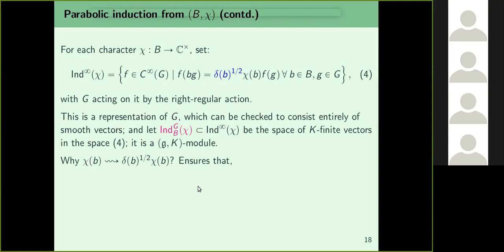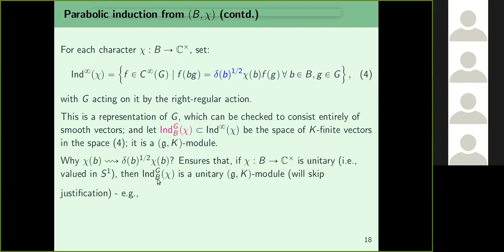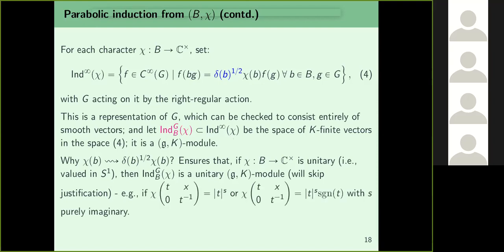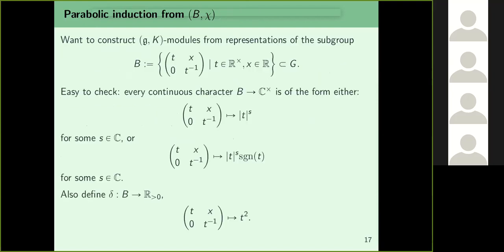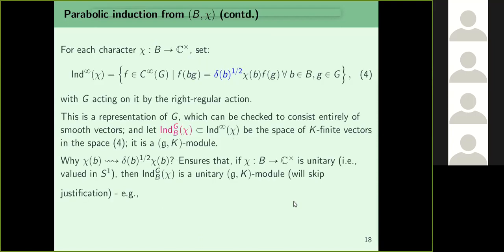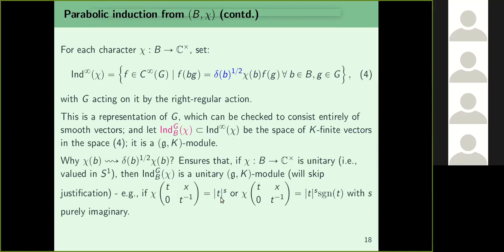The normalization by delta^{1/2} ensures that if chi is unitary, then Ind_B^G(chi) is also unitary. Sager asked which branch of the square root for delta^{1/2}: since delta(b) = t^2, which is real and positive, we take the positive square root. For instance, if chi(t x; 0 t^{-1}) = |t|^s or |t|^s times sign(t) with s purely imaginary, then chi is unitary, ensuring the induced representation is unitary.